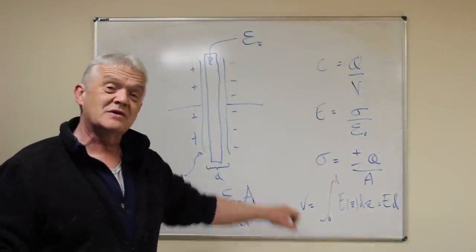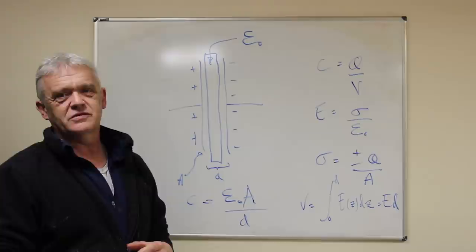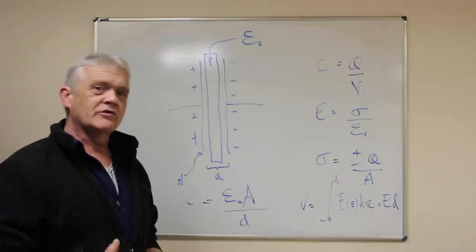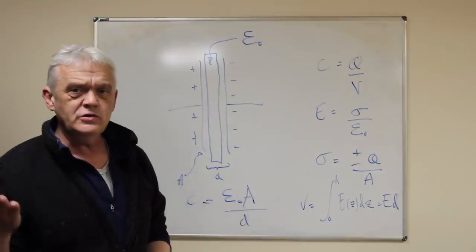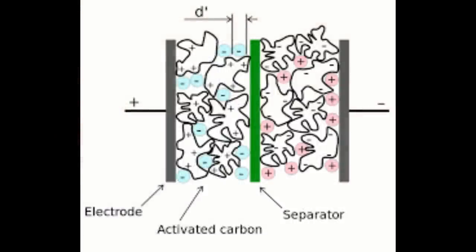We can make this really, really big, which is exactly what they do with capacitors by roughening the surface area, rolling up the plate so you get a lot in a small size, or using a carbon with a high surface area.